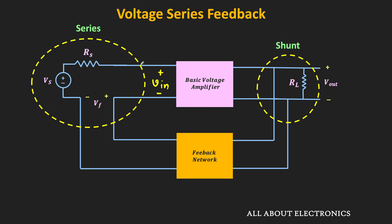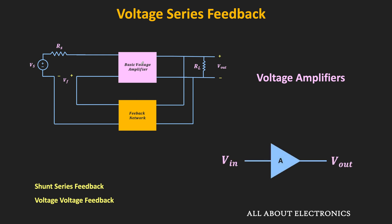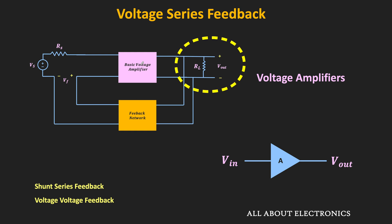Alternatively, this feedback topology is also known as the shunt-series feedback, because on the output side we have a shunt connection while on the mixing side we have the series connection. In many textbooks, it is also referred to as voltage-voltage feedback, because both the sensing signal and the mixing signal are voltages. Voltage amplifiers typically use this feedback topology, since in a voltage amplifier the input is a voltage signal and the amplified output is also a voltage signal.